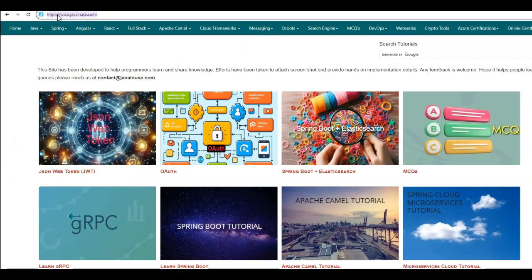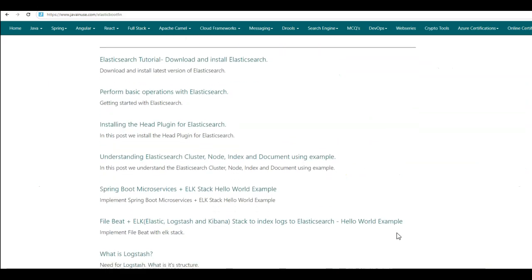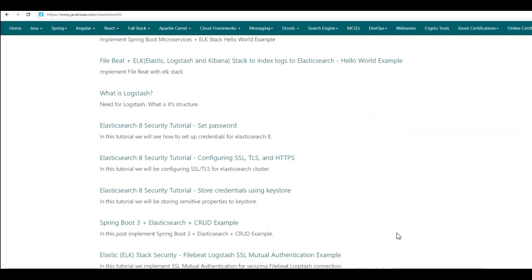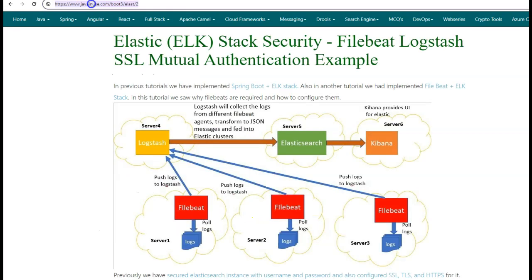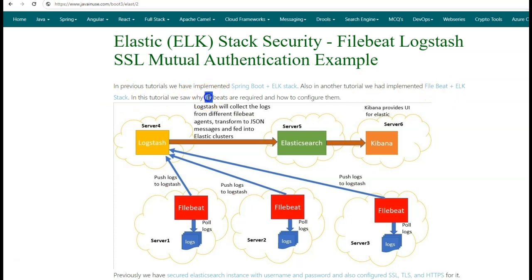I'll be taking reference of our website javanews.com. Go to Spring Boot Elasticsearch. The example we'll be implementing today is Filebeat-Logstash SSL Mutual Authentication. I'll be sharing this URL along with the YouTube video. In a previous tutorial, we had implemented Spring Boot ELK stack, and in another tutorial, we had implemented Filebeat ELK stack. So in this tutorial, we had seen why Filebeats are required and how to configure them.